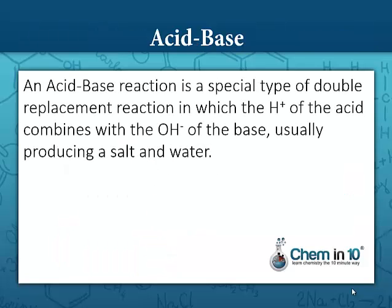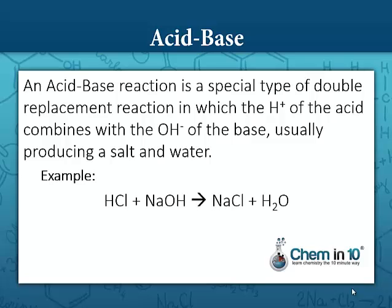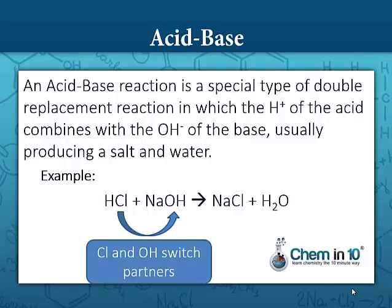An acid-base reaction is a special type of double replacement reaction in which the hydrogen ion of the acid combines with the hydroxide ion of the base, usually producing a salt and water. Here we have hydrochloric acid and sodium hydroxide — they switch partners. The chlorine and hydroxide switch, so hydrogen combines with hydroxide forming water, and sodium combines with chloride to form sodium chloride.